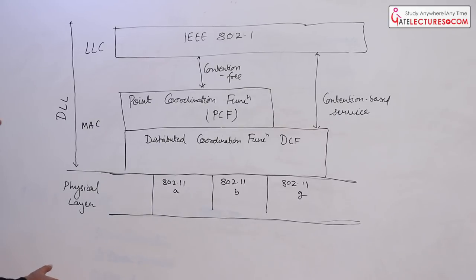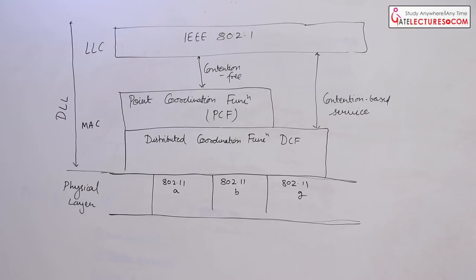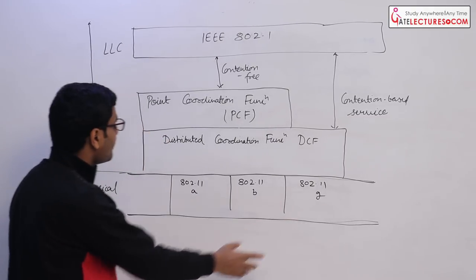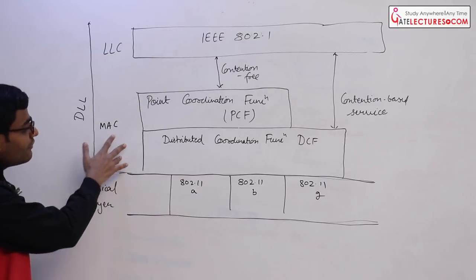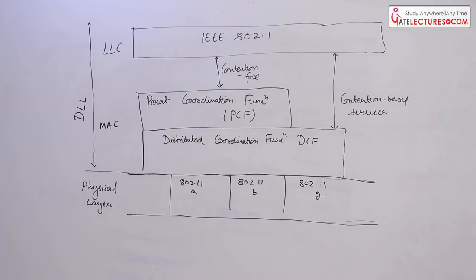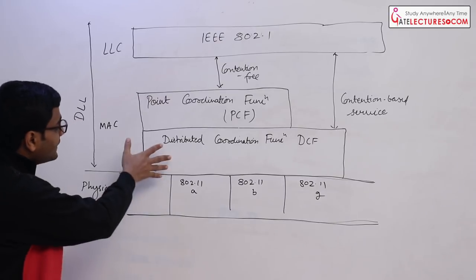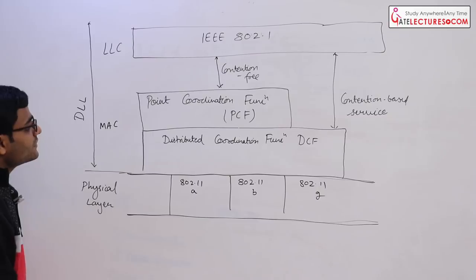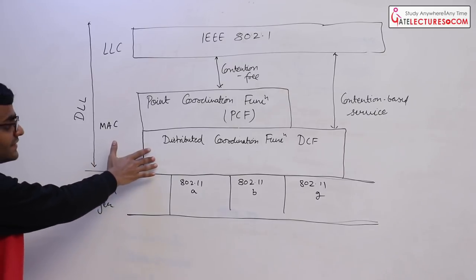This standard specifies two layers: the physical layer and the data link layer. In the physical layer, based on the encoding scheme or multiplexing scheme, we have various versions: 802.11a, 802.11b, 802.11g. In the data link layer we have two parts: the MAC layer and the Logical Link Control layer. In the MAC layer we have two sub-layers: DCF — Distributed Coordination Function — and PCF — Point Coordination Function. 802.11 provides two kinds of services: contention-free services and contention-based services. DCF provides contention-based services and is compulsory. If we want contention-free services, we can have PCF running on top of DCF. We will learn about DCF first.